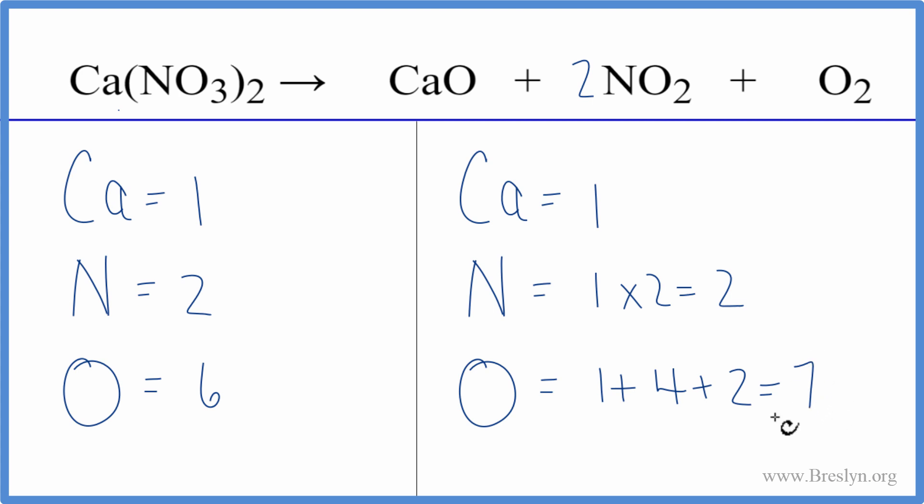Really at this point, since I have seven here and six here, I know that I'm gonna have to have a bigger number here to balance it out. So I think I'm just gonna put a two in front of the calcium nitrate. Then I have to update all these numbers.